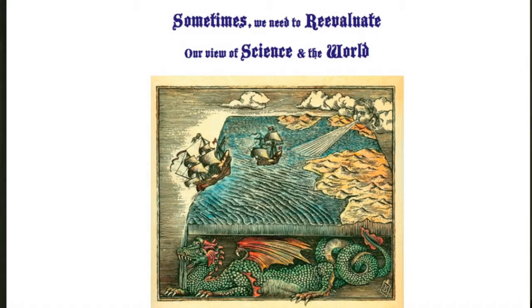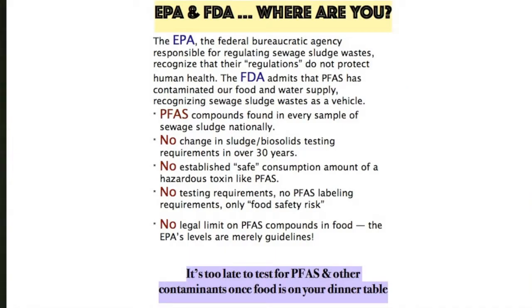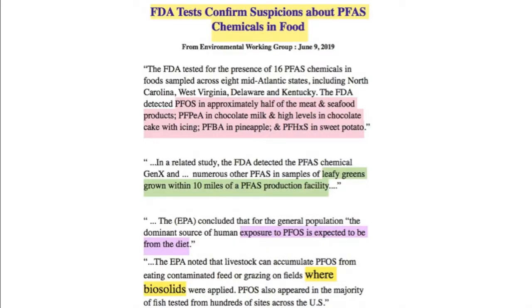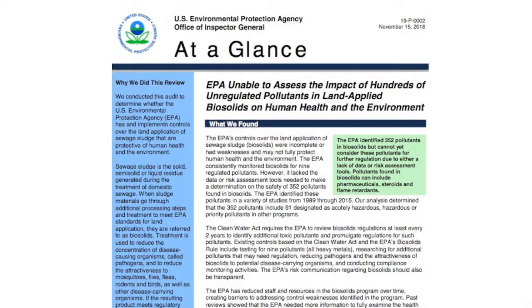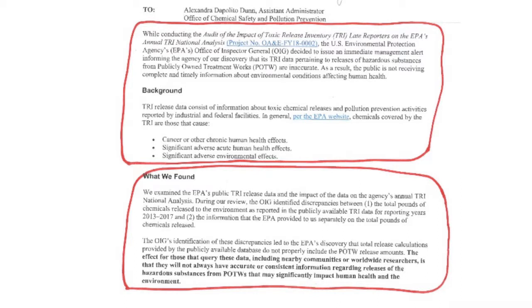Sometimes we need to reevaluate science and our worldview. FDA, EPA — where are you? Rules haven't changed for 30 years. One of the handouts is the FDA recognizing that, yes, in fact, it's in our food supply. The FDA Environmental Working Group did a wonderful article on this. FDA said it's kind of in there, but basically our food safety risk says you'll be fine. EPA said we actually don't know how to regulate this — and flip it over, EPA saying, yeah, actually, you're screwed.